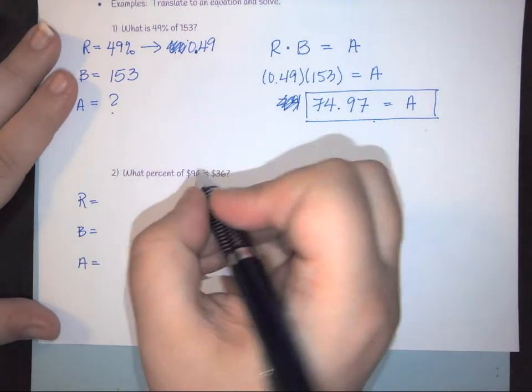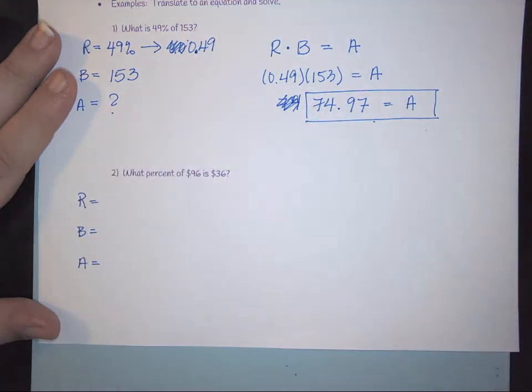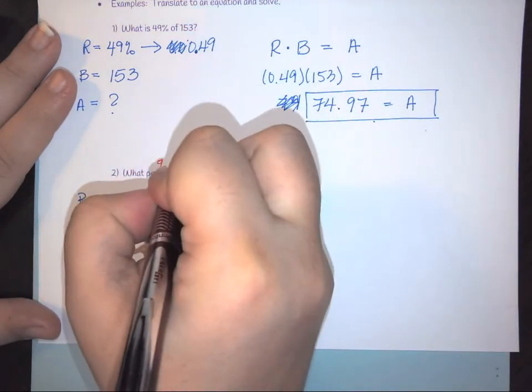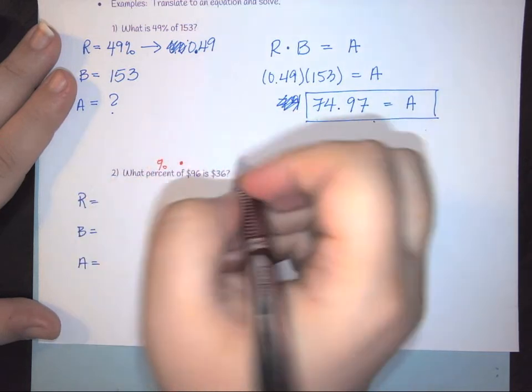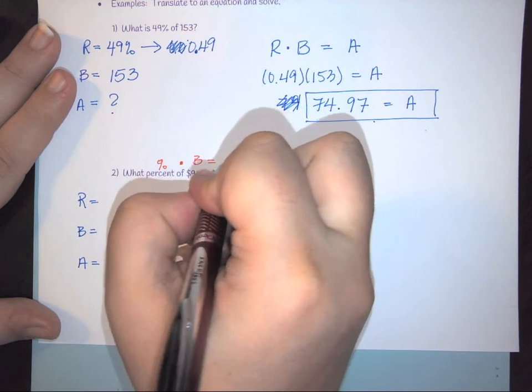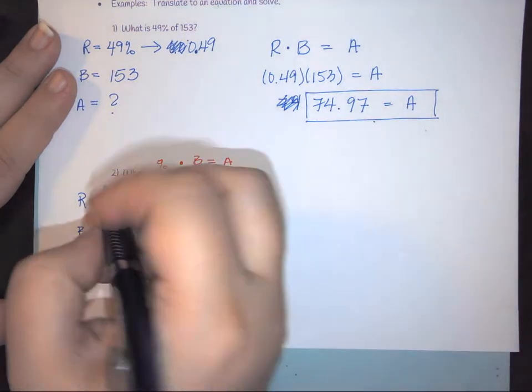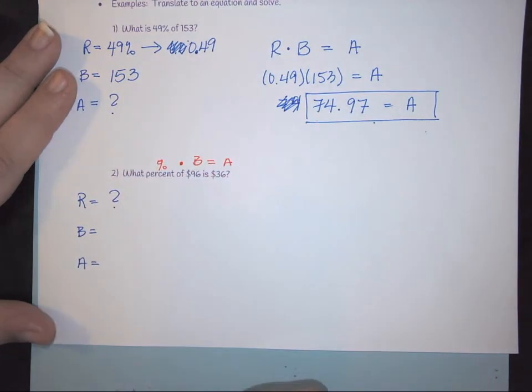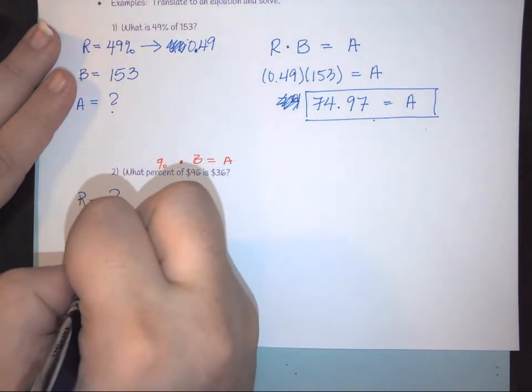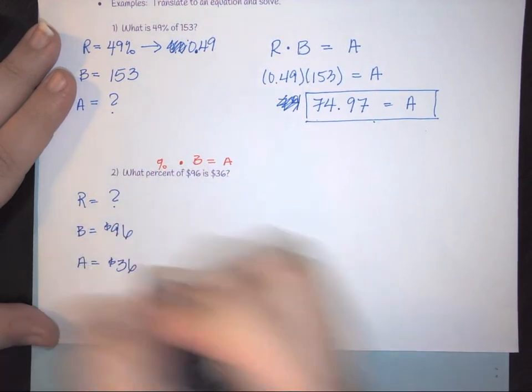So again, if we look at it, this is telling us that we have, I'm going to use this one, percent of B is A, if that kind of makes sense. So here the R is missing. Our B is the $96, and our A is $36.